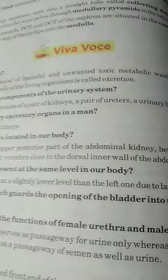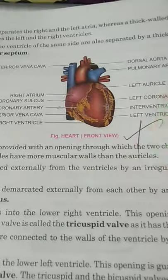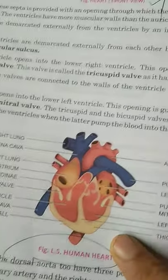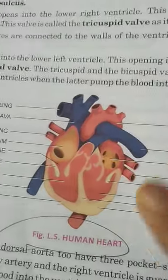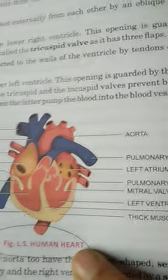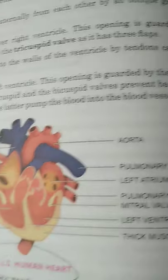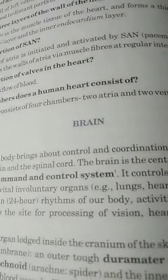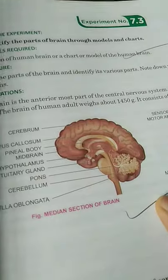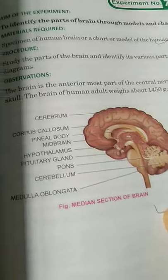Experiment number 7.2 is to identify the internal structure of a human heart through models and charts. You have to draw only the longitudinal section of the human heart — one diagram only. Experiment 7.3 is to identify the parts of the brain through models and charts. Draw this brain diagram only — no need to draw the other diagram — and write everything in short form.